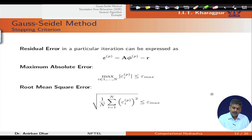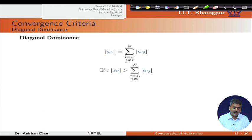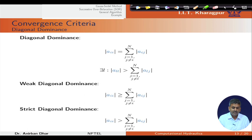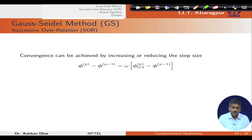Diagonal dominance is required for this method. Without diagonal dominance, convergence is not possible for Gauss-Seidel iteration.